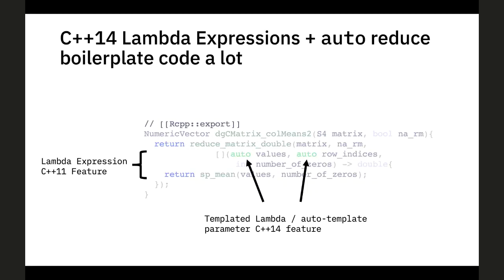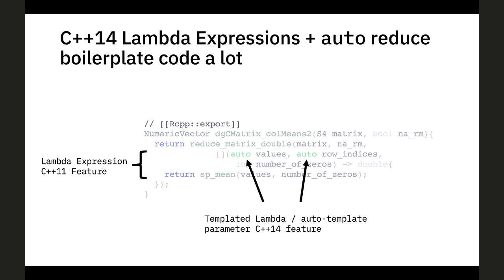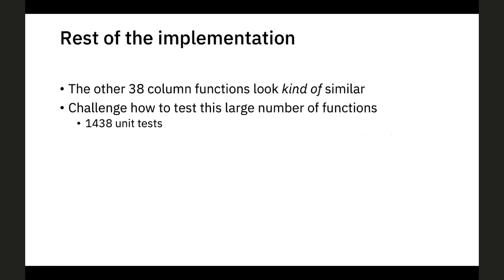I settled on auto template parameters from C++14, which makes the code really concise and reduces boilerplate a lot. I don't have to repeat creating the result, filling it, making an iterator, and writing a loop to iterate over all columns. I simply call the reduce_matrix_double function, which is really generic, and then internally I can work on individual columns where I only have the number of zeros and the dense values to handle.